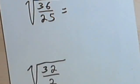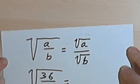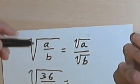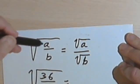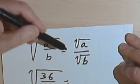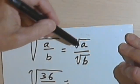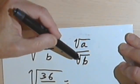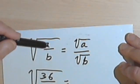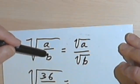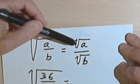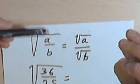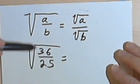The quotient rule also works in the opposite direction. In other words, if we have the square root of a over b, we can say that equals the square root of a over the square root of b. We can take this fraction apart and put it under two separate radical signs. Here's an example.